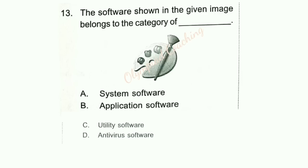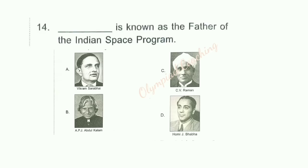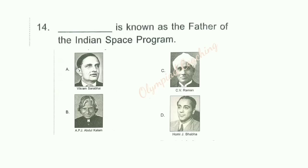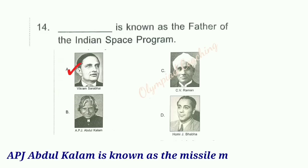Question number 13: The software shown in the given image belongs to which category? Option B is correct — Application software. Question number 14: Who is known as the father of the Indian space program? Option A is correct — Vikram Sarabhai is known as the father of the Indian space program. Option B — A.P.J. Abdul Kalam — is known as the missile man of India.